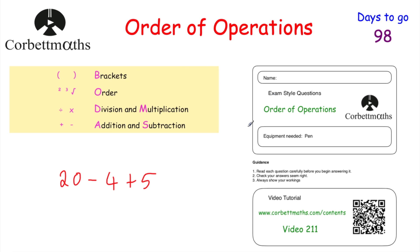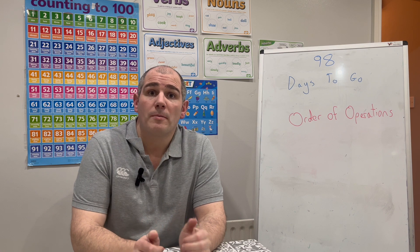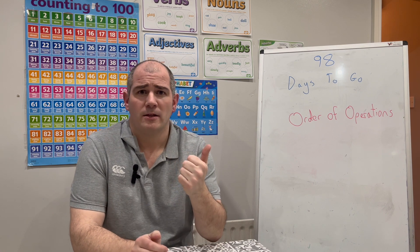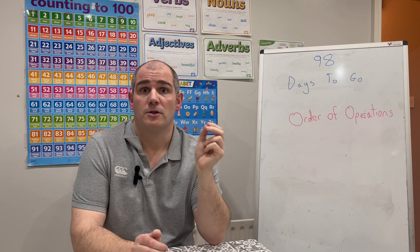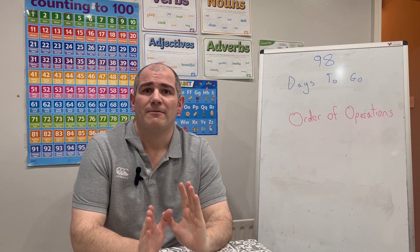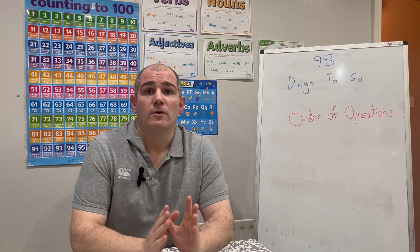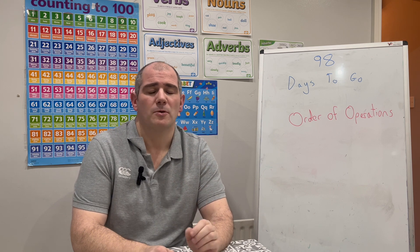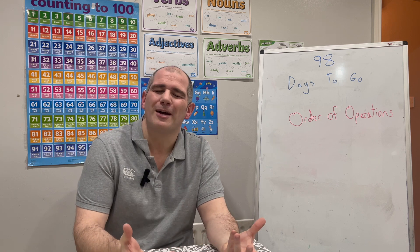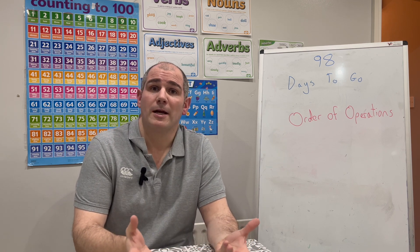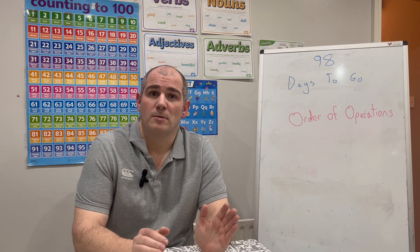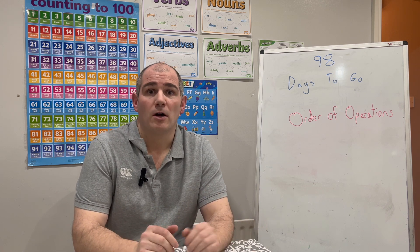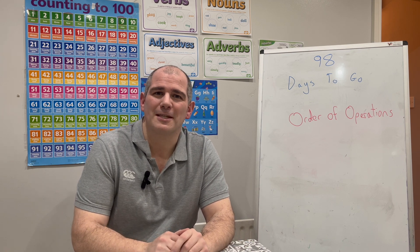So in this video we've looked at the order of operations. In the description below there's a link to the practice questions — it's very important to practice those and make sure you're confident on order of operations. Remember the correct order: brackets, orders or indices, divisions and multiplications, then additions and subtractions. Please like and subscribe to the YouTube channel, and keep an eye out for tomorrow's video at three o'clock — 97 days to go to your GCSE Maths exam!